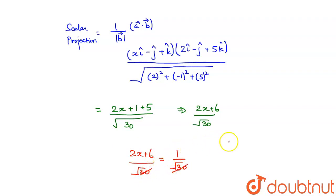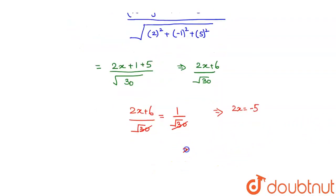So 2x plus 6 upon root 30 is equal to 1 upon root 30. Root 30 gets canceled out. So this implies I get 2x is equal to minus 5. So the value of x would be minus 5 by 2.